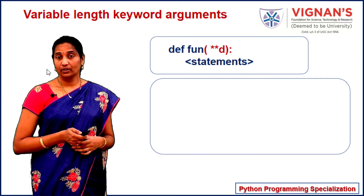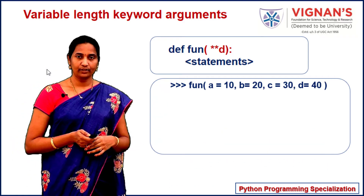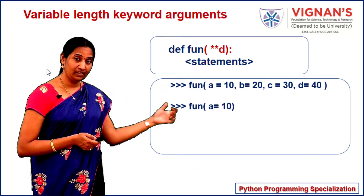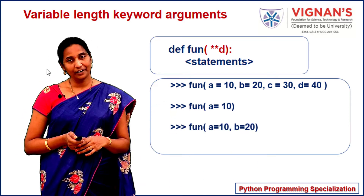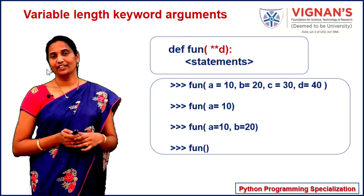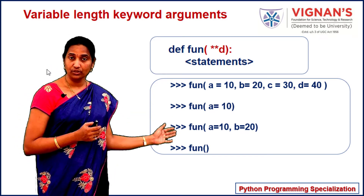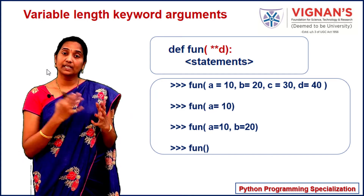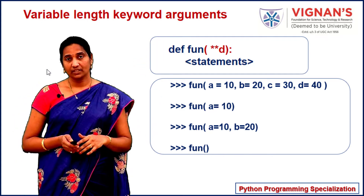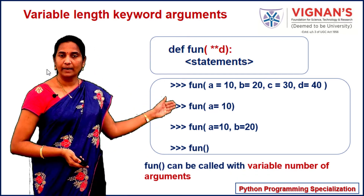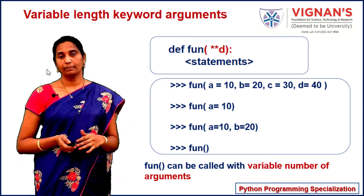You can call this function with four different arguments, a single argument, two arguments, or even without any argument. When no argument is passed to a function that accepts multiple keyword arguments, the parameter takes an empty dictionary. That's how you can pass a variable number of arguments as keywords to a function parameter.